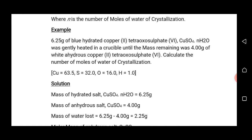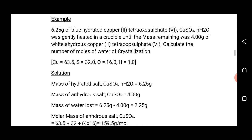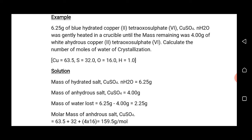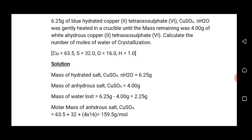Example: 6.25 g of blue hydrated copper(II) sulfate, CuSO₄·nH₂O, was gently heated in a crucible until the mass remaining was 4.00 g of white anhydrous copper(II) sulfate. Calculate the number of moles of water of crystallization. Given: RAM of copper = 63.5, sulfur = 32.0, oxygen = 16, hydrogen = 1.